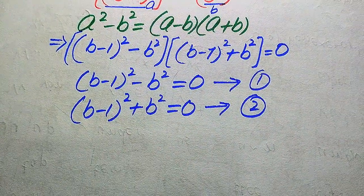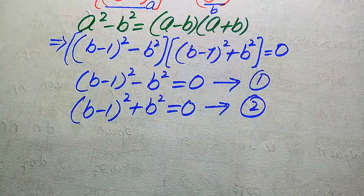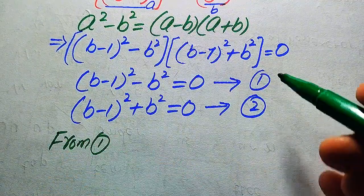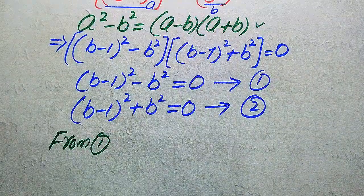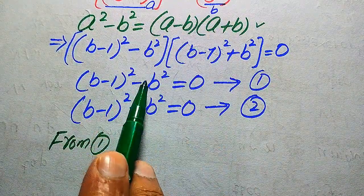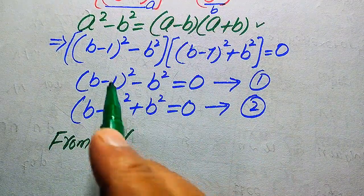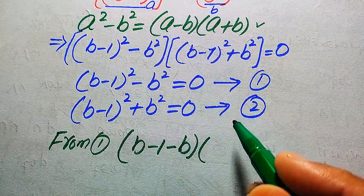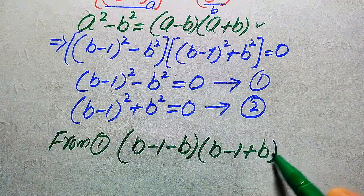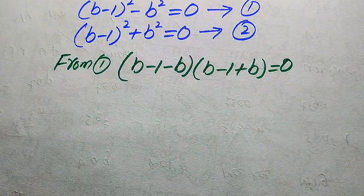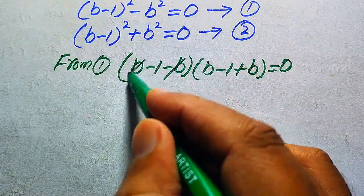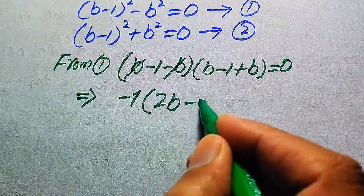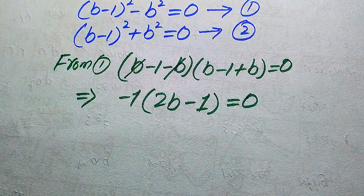We first focus on equation 1. From equation 1, we again apply the difference of squares formula. After applying it, the first factor is (b minus 1 minus b) and the second factor is (b minus 1 plus b), equals 0. Here, negative b and positive b cancel out, giving us minus 1 times (2b minus 1) equals 0.